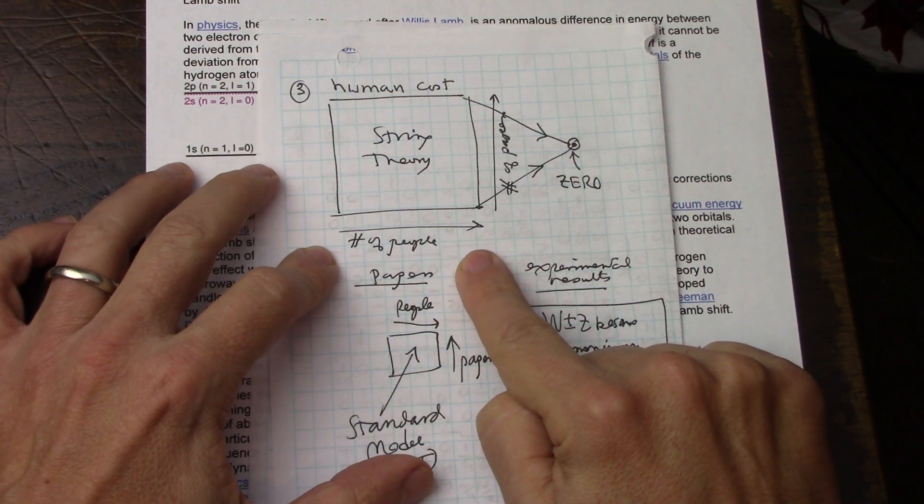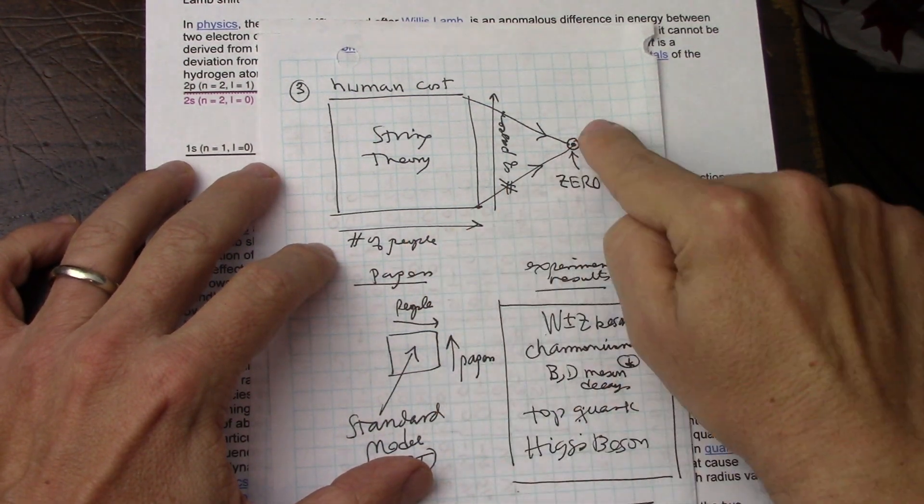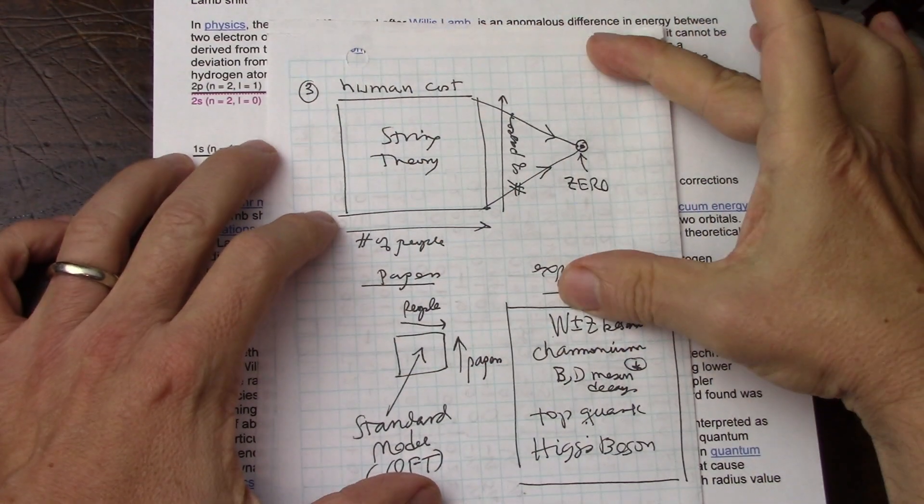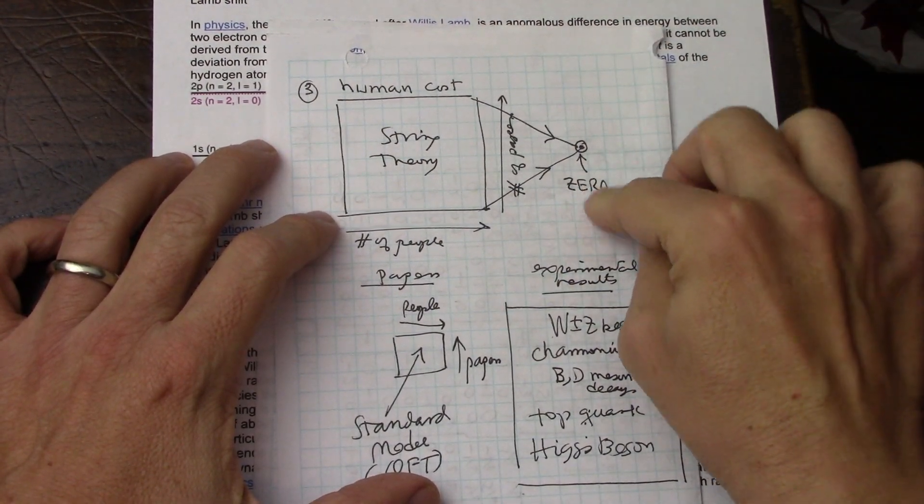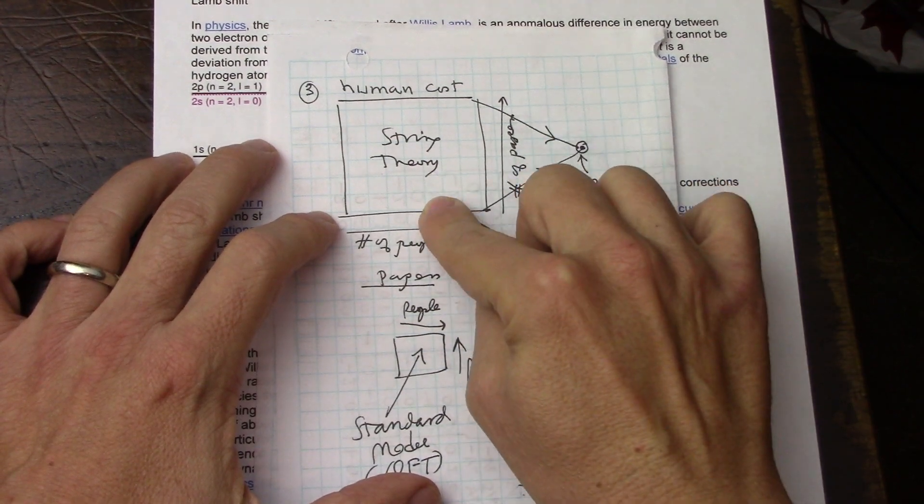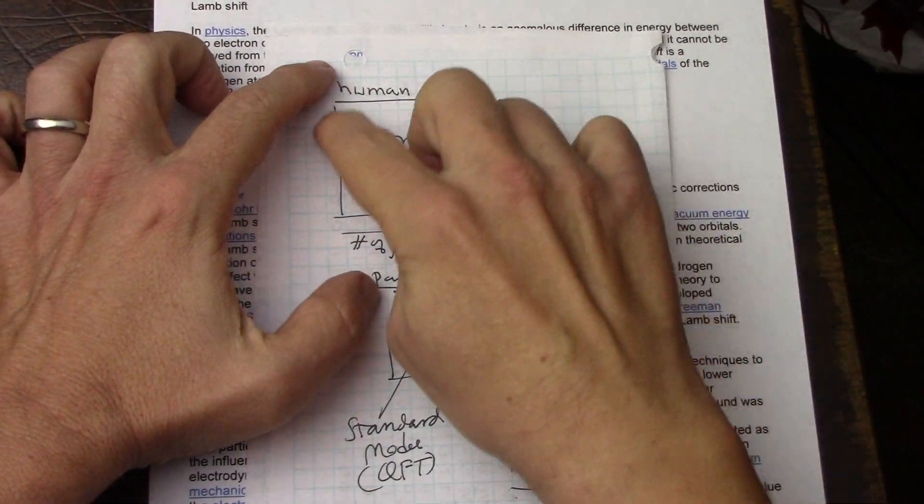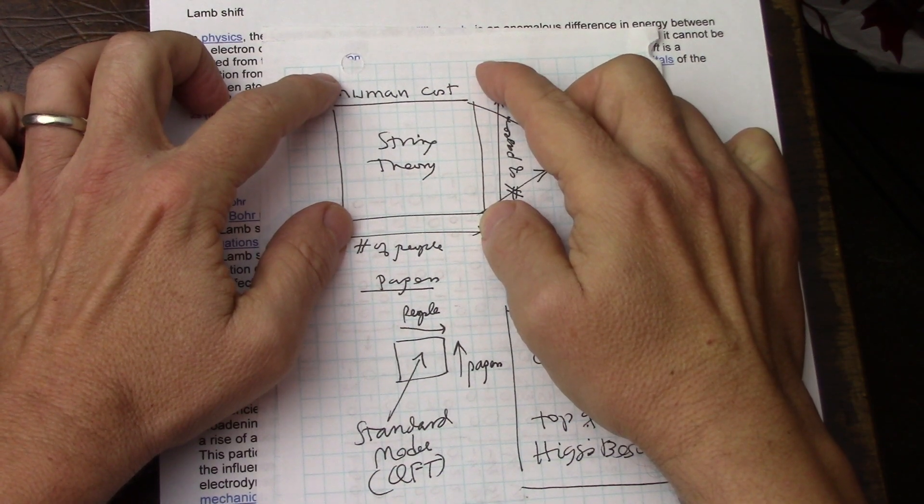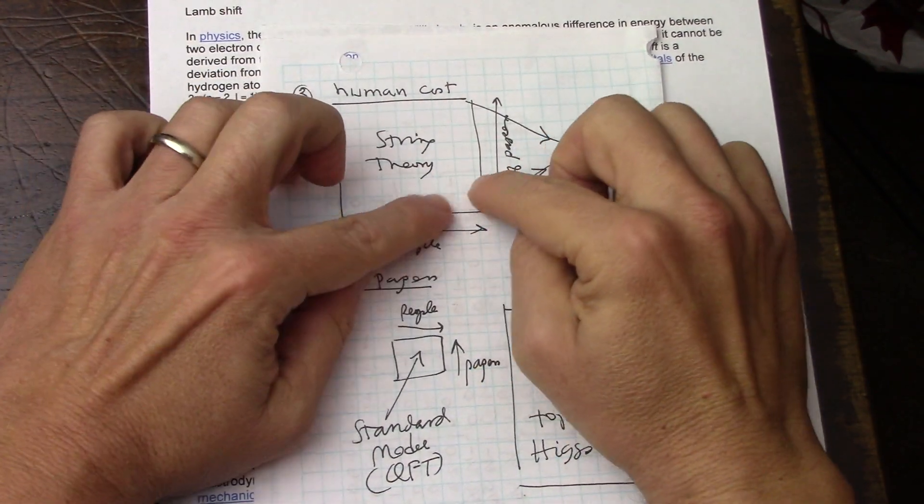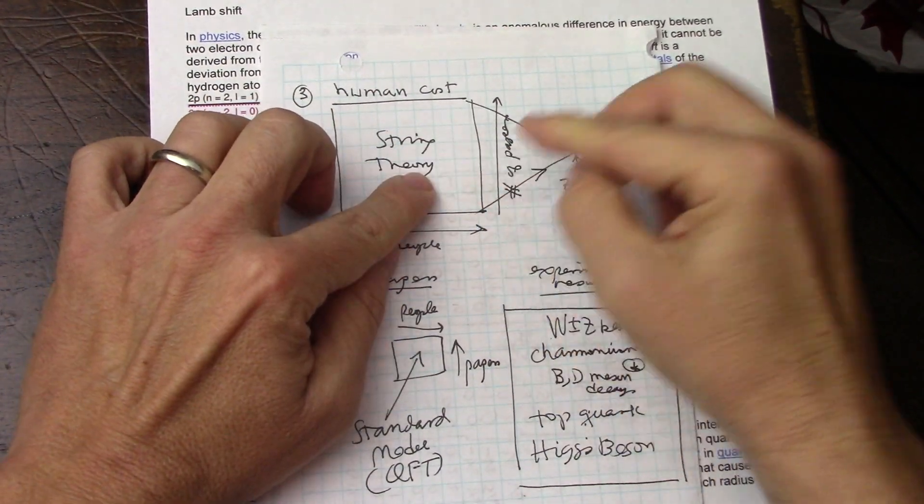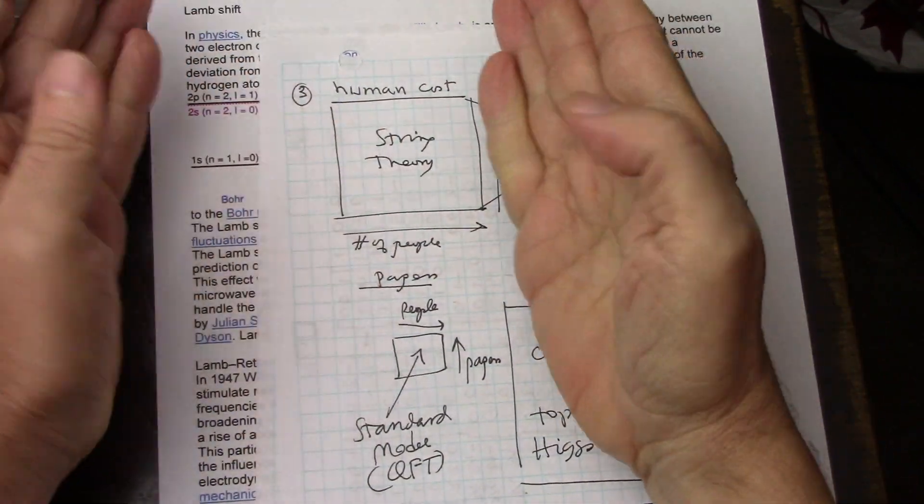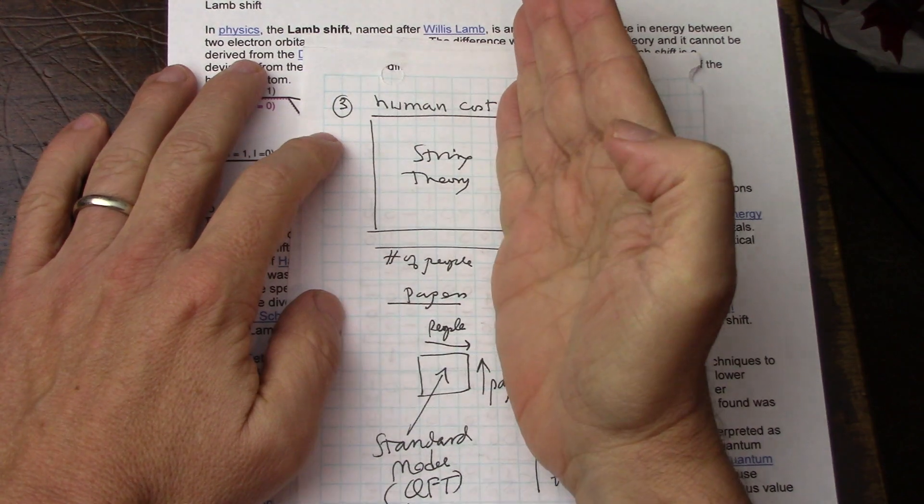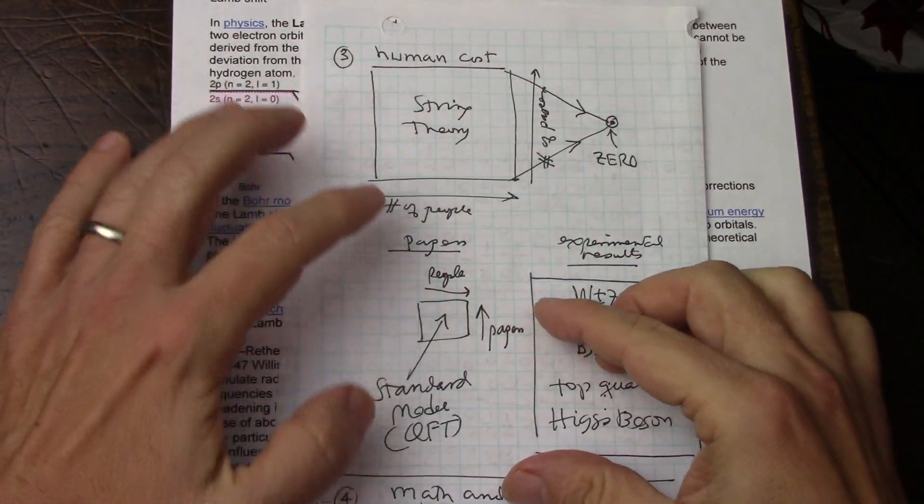So the thing that really happened with string theory is how it ballooned into thousands and thousands of papers by hundreds and hundreds of people, when really, there's no experimental results. Now, that is not to say that someday, somebody could make an experiment and prove something in string theory.